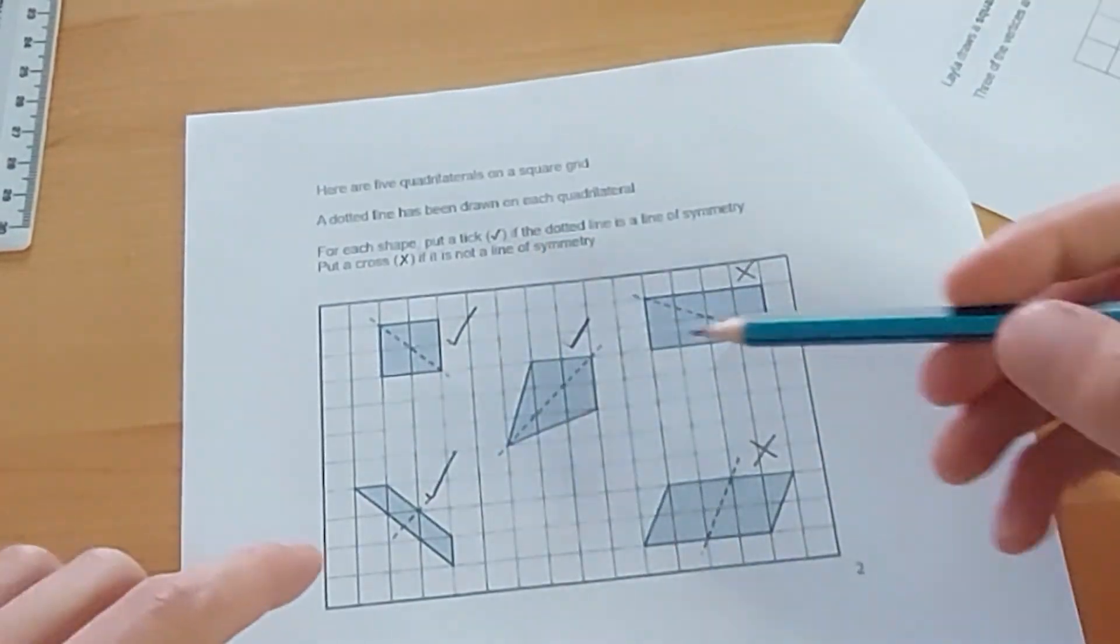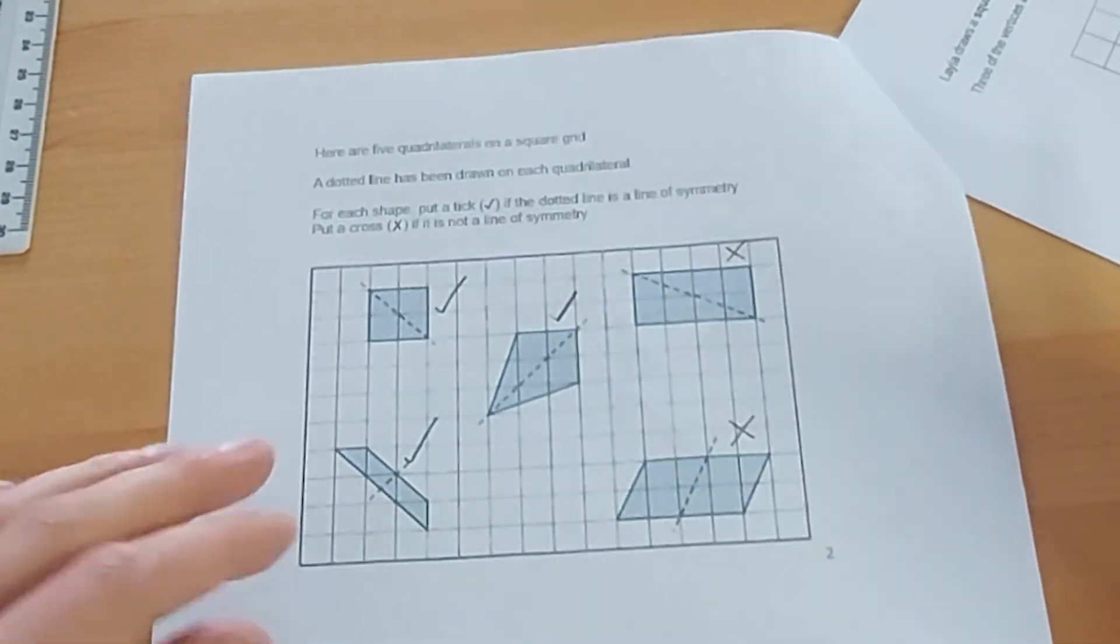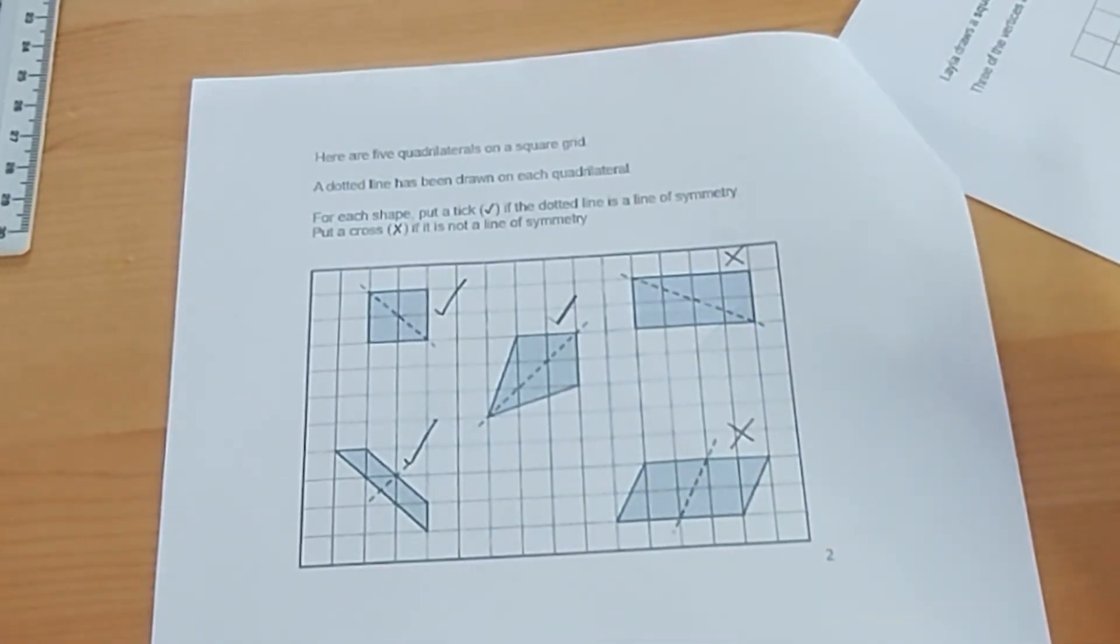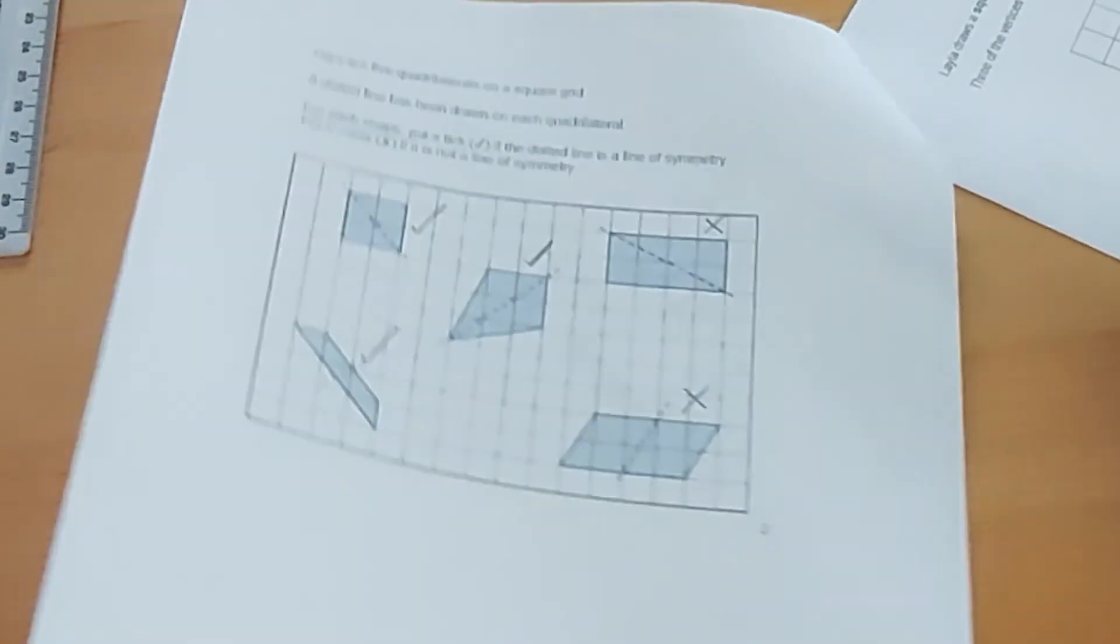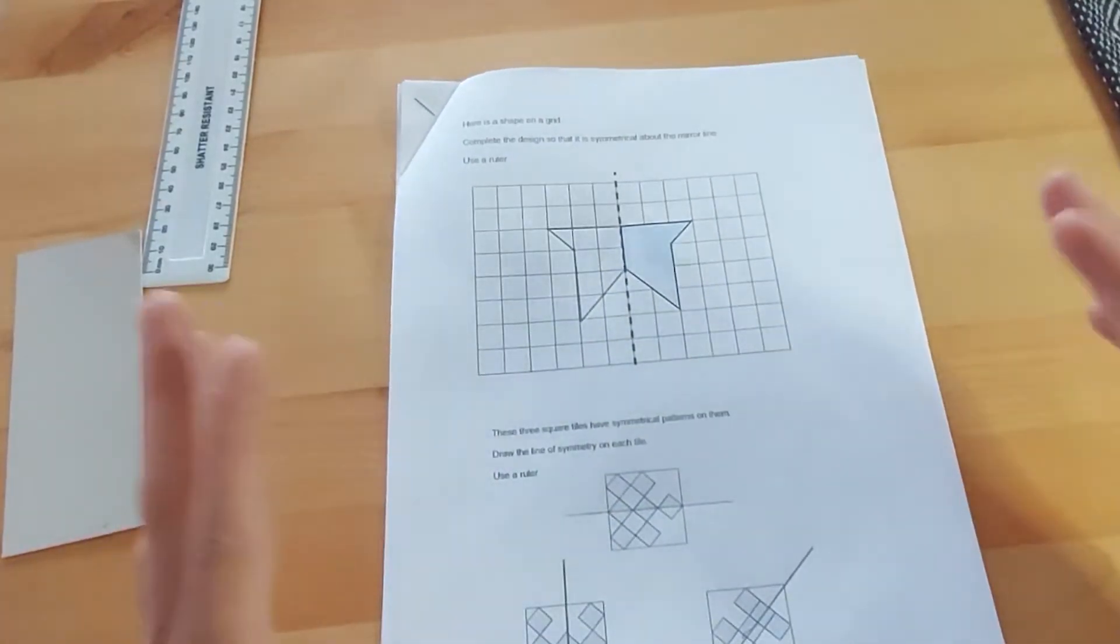So that will be tick, tick, tick, cross, cross. And again, that will be a mark for that question. So three different types of symmetry style questions for you to have a look at and see how I solved them. And these are SATs questions. So there will probably be something similar that comes up in the SATs test.